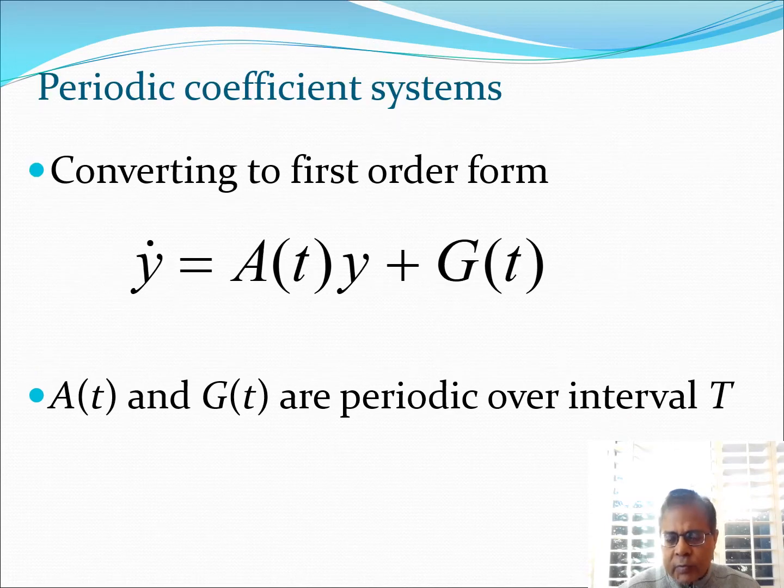The first thing we do to make the equations more suitable for stability analysis is to convert it to a system such as this. Essentially we have y dot equals A(t)y plus G(t), where A(t) and G(t) are periodic functions with time period given by capital T. We explained this in a previous video on constant coefficient differential equations. Recall that A constitutes M, C, and K matrices, and G constitutes the M and F matrix and vector respectively.